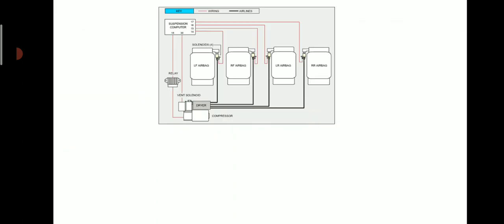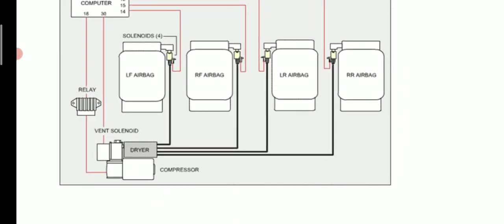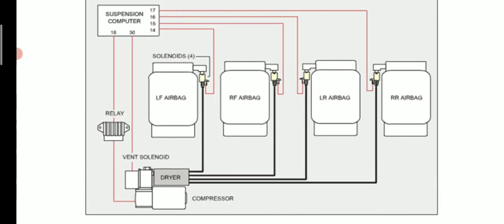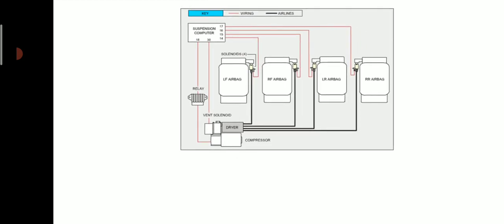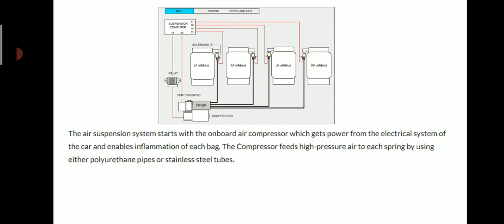This is another layout of the air suspension system in which you will clearly see the air bags — left front air bag, right front air bag, left rear air bag, and right rear air bag — along with the compressor, relays, and ECU (Electronic Control Unit). The air suspension system starts with the onboard air compressor, which gets power from the electrical system of the car and enables inflation of each bag. The compressor feeds high-pressure air to each spring using either polyurethane pipes or stainless steel tubes.